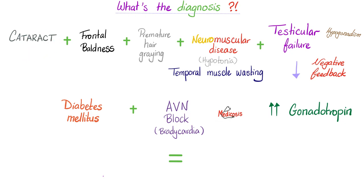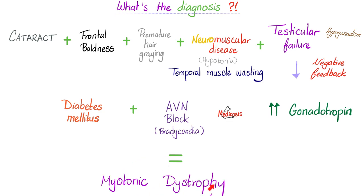Next: congenital cataract plus frontal baldness plus premature hair graying plus neuromuscular disease — hypotonia, temporal muscle wasting, testicular failure (hypogonadism with elevated gonadotropin levels because the pituitary is overcompensating), plus diabetes and heart block. What's the diagnosis? Myotonic dystrophy, also called myotonic muscular dystrophy.